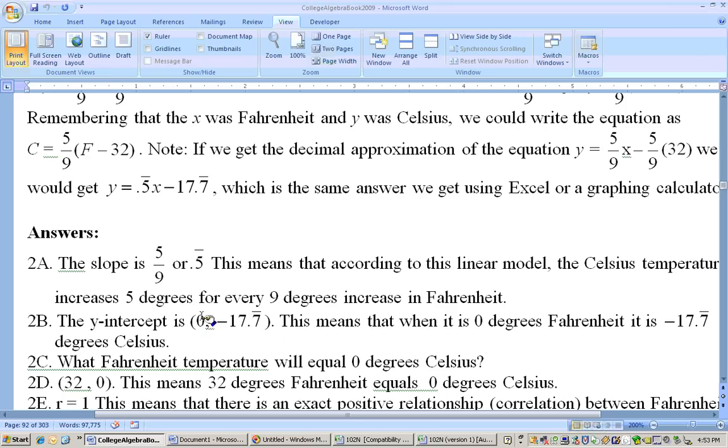negative 17.7, and that means, again, the 0, or the first part, the x part, is the Fahrenheit, so at 0 degrees Fahrenheit, it's the same as negative 17.7 repeating degrees Celsius, okay.